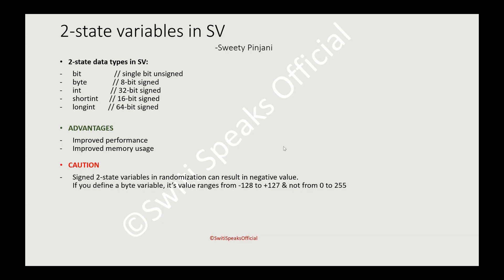This is something to be cautious about while using two-state variables during randomization. If you don't want negative values, you need to be very cautious. The solution is to explicitly declare these two-state variables as unsigned, so that they don't take any negative value.